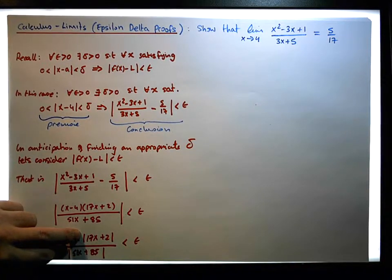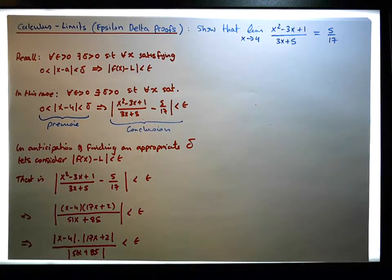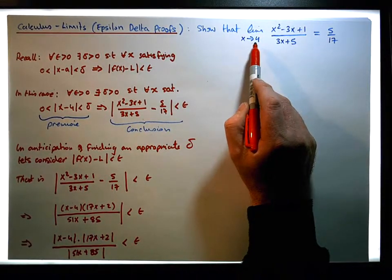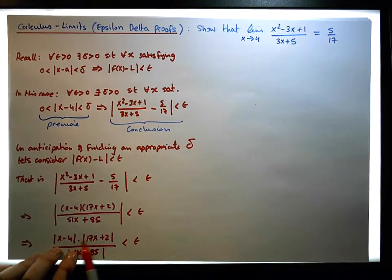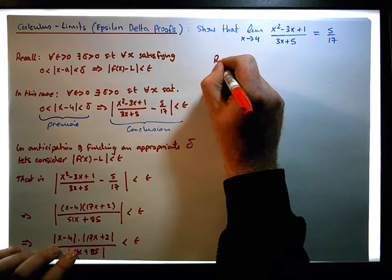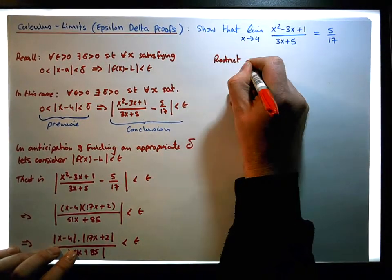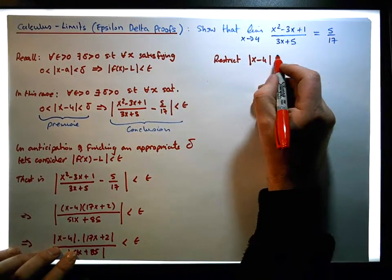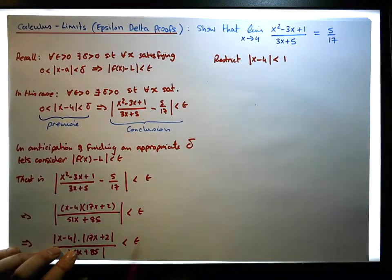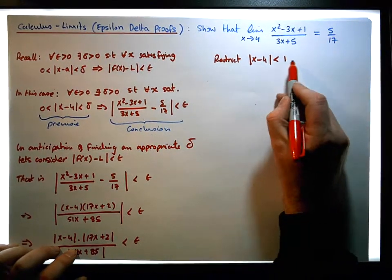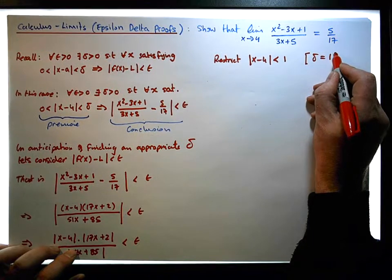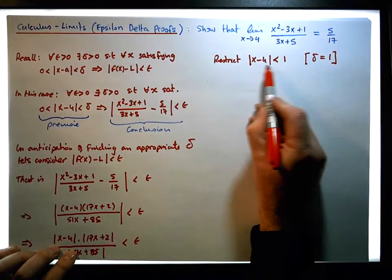The attack strategy is that we want to consider this particular limit as it gets close to 4. So what I'm going to do is we're just going to restrict x minus 4 — restrict the absolute value of x minus 4 — to be within one unit of 4. In other words, I'm choosing delta equal to 1 here. So we're choosing delta equal to 1, and let's see what happens here.